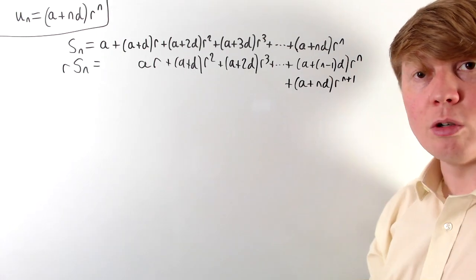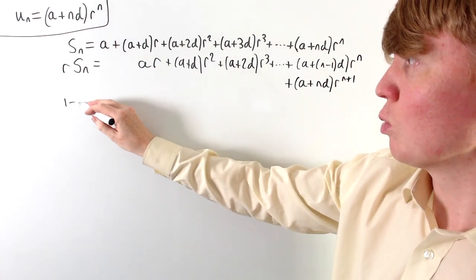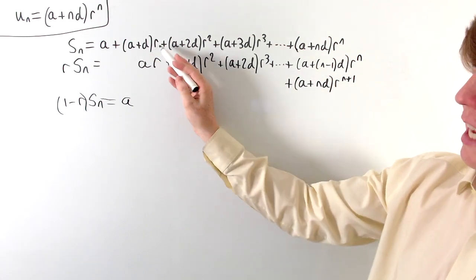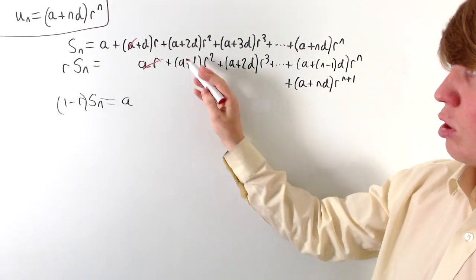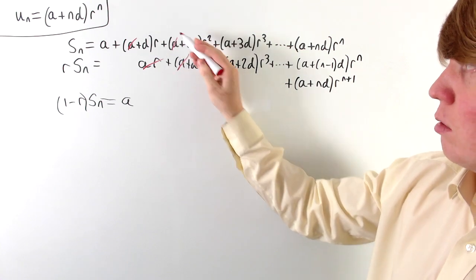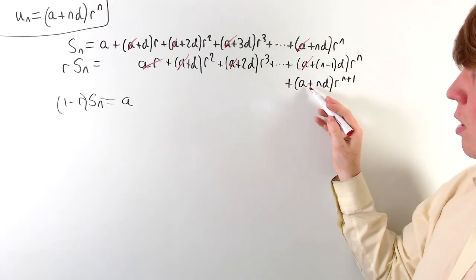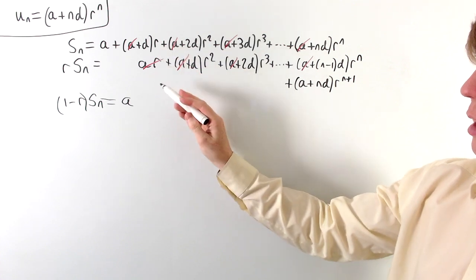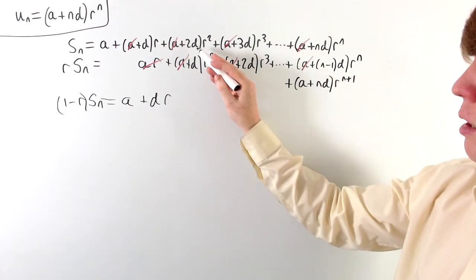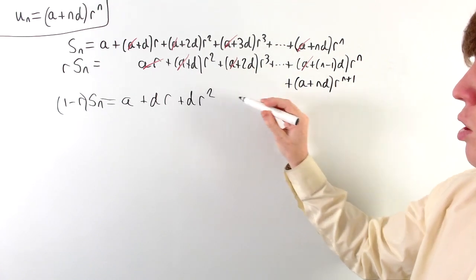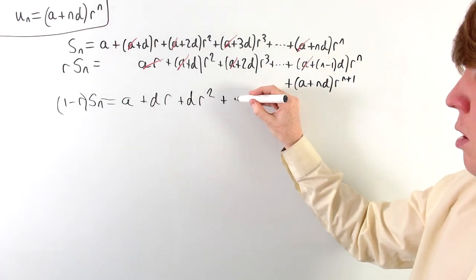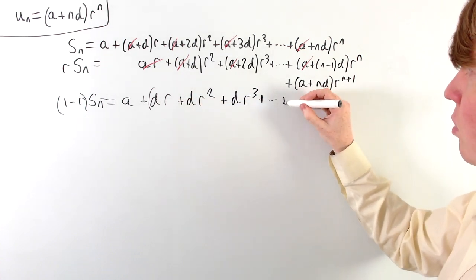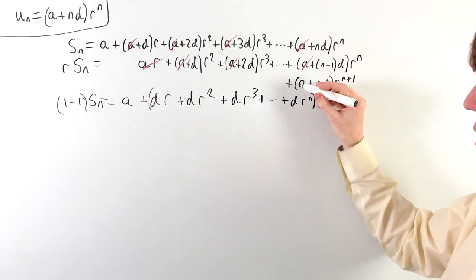Now we subtract the second equation from the first to get (1 − r)·Sₙ. The a·r, a·r², a·r³ terms all cancel with each other. The only surviving 'a' term is −(a)·r^(n+1). Looking at the d terms: dr has nothing to subtract, so we keep dr; 2d·r² minus d·r² gives d·r²; 3d·r³ minus 2d·r³ gives d·r³; and so on, all the way up to d·rⁿ. Then we subtract the remaining term −(a + nd)·r^(n+1).